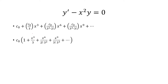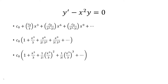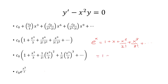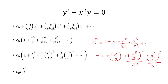Now I can factor out c sub 0 and write the sum. Recall that e to the x equals 1 plus x plus x squared over 2 factorial plus x cubed over 3 factorial, etc. The difference here is we have x cubed over 3 inside. Whatever is in the parentheses is the base of the exponent of e. So this is c sub 0 times e to the x cubed over 3.